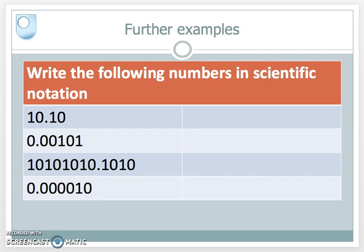Well, just obey the rules. In the top digit there, 10.10, I'm going to move the decimal point one place to the left. So my power of 2 is going to be 1. In the second digit there, we're going to move the decimal point to the right, which is negative. And I'm going to move it 1, 2, 3 places. So my power of 2 is going to be minus 3.